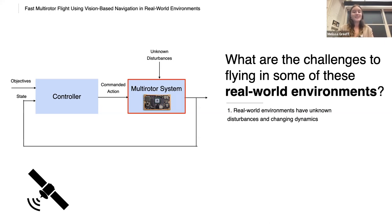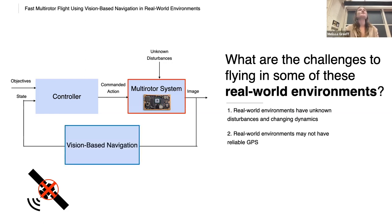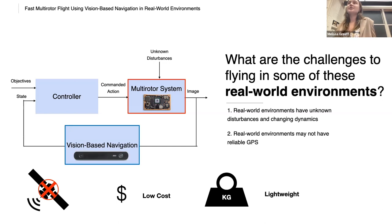The second challenge is that real world environments may not have reliable GPS, and this could be a result of intentional jamming or effects like multi-path propagation. So vision-based navigation, where we rely predominantly on an onboard camera as a backup for feedback, is both a low cost and lightweight alternative.